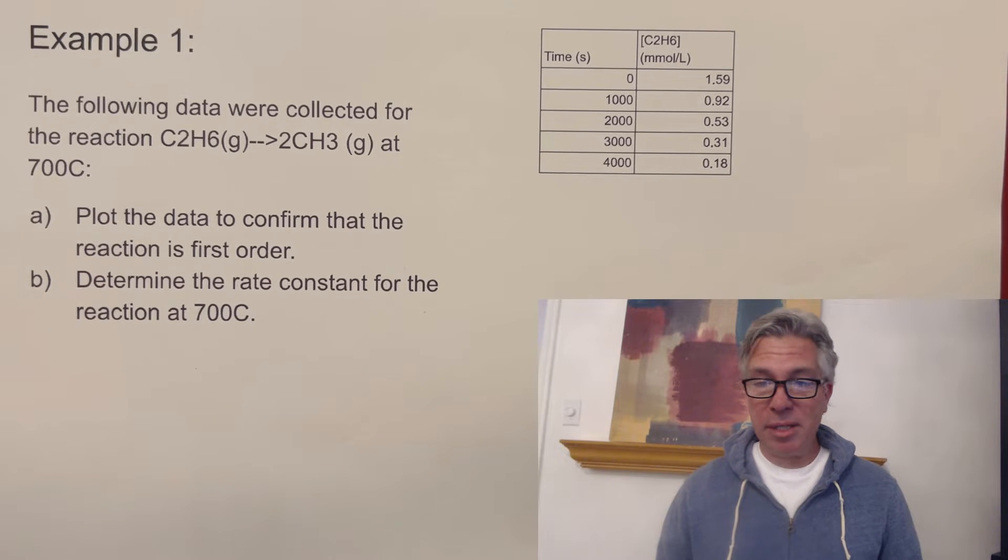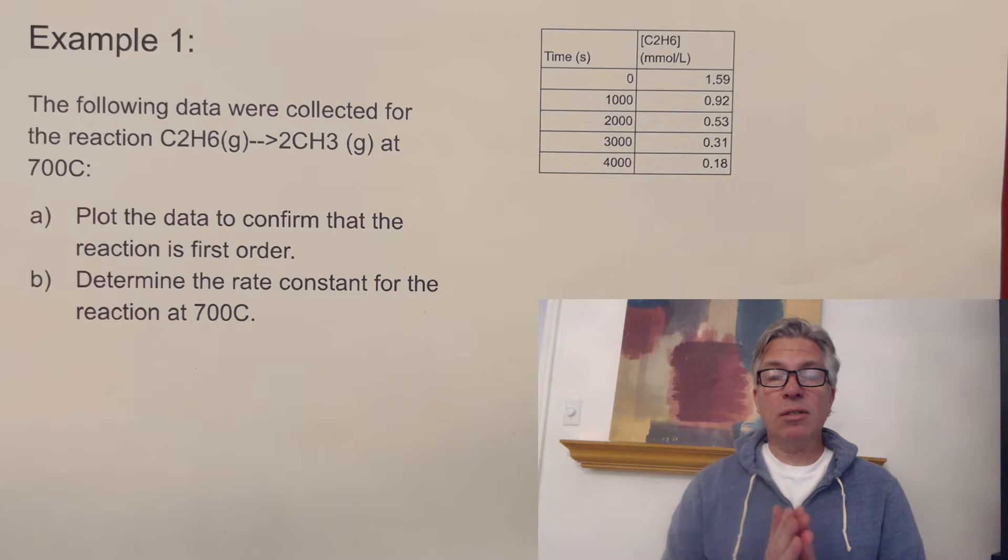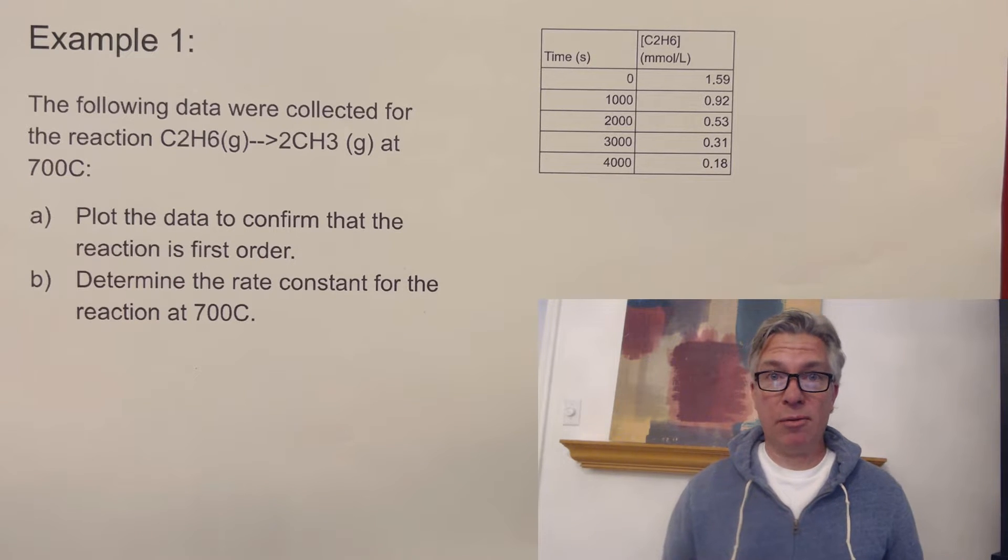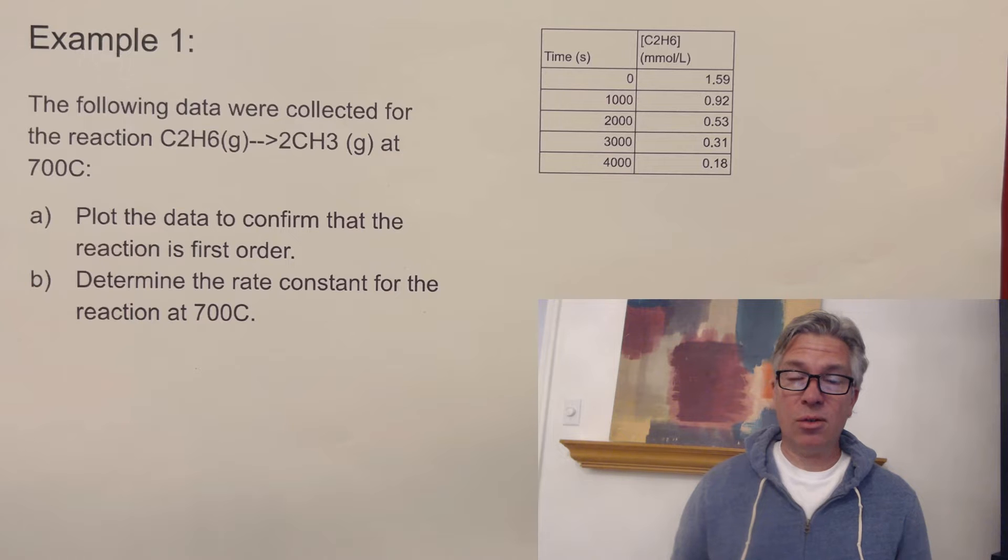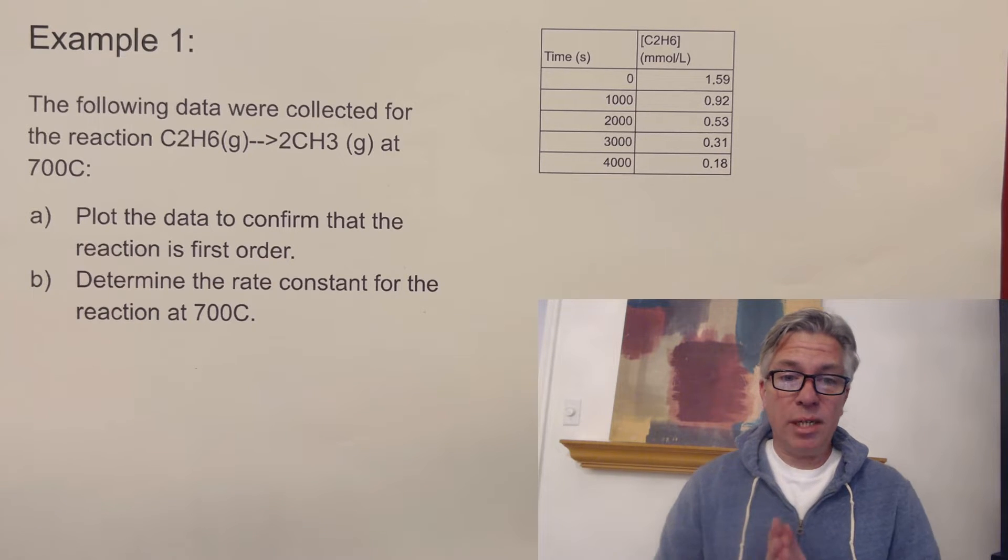That said, welcome to this episode of Crowded Beaker. And in our previous episode, we were learning about the three orders of reactions that we're going to be responsible for: first order, second order, and zero order reactions. There are other ones, but those are the ones that we, for example, in AP Chem, need to be responsible for.